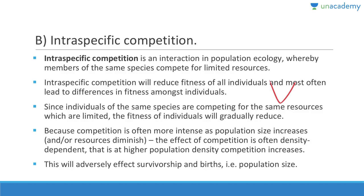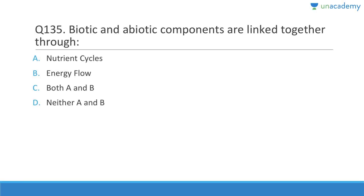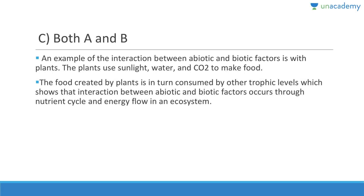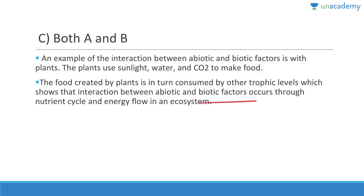Question 135: Biotic and abiotic components are linked together through nutrient cycles and energy flow. An example is plants using sunlight, water, and CO2 to make food, which is then consumed by primary consumers, secondary consumers, etc. This shows interaction between abiotic and biotic factors throughout the nutrient cycle and energy flow in an ecosystem.